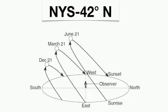Starting with December 21st, the sun rises in the southeast and sets in the southwest. It's only going to be out for about nine hours — a very short path with a very low angle of insolation. The altitude of the sun is going to be about 24.5 degrees above the horizon. That noon sun is going to produce a very long shadow for the observer. Because the noon sun is in the southern sky, the shadow of the observer will always face north.